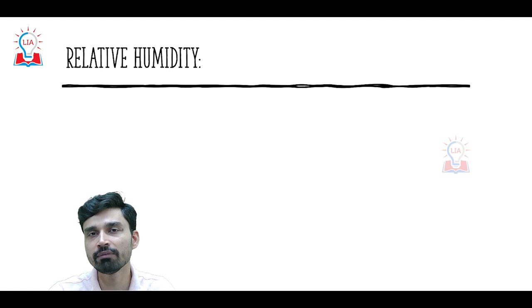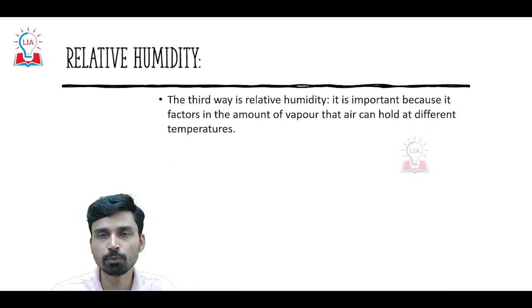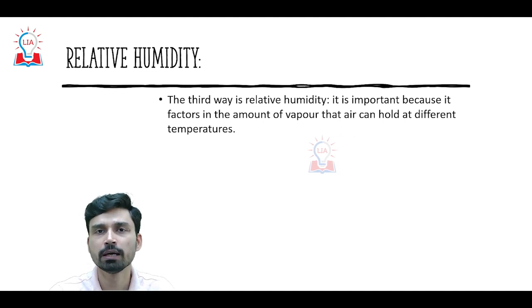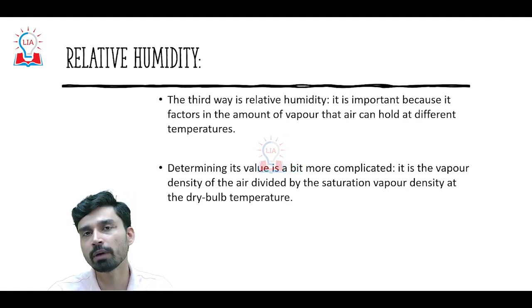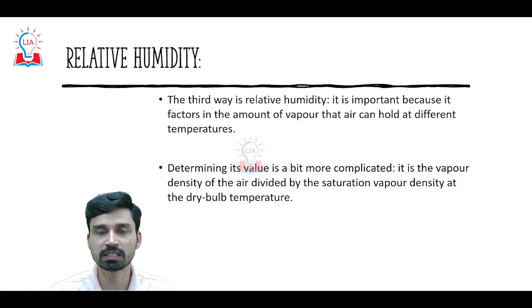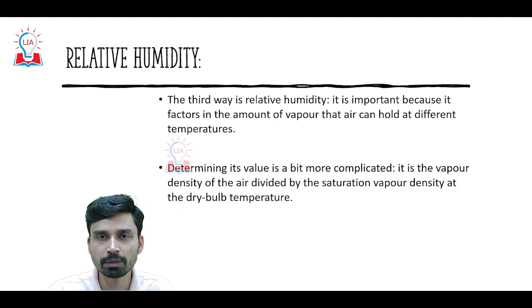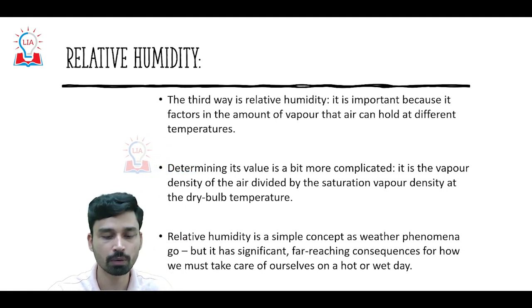The third way, which is the most relevant and most used, is what we call relative humidity. Relative humidity is very important because it factors in the amount of water vapor that can be held by a particular air parcel at different temperatures. Determining relative humidity is more complicated because we also have to take into consideration vapor pressure, vapor density, wet bulb temperature, and dry bulb temperature.